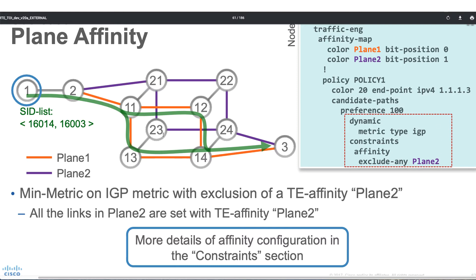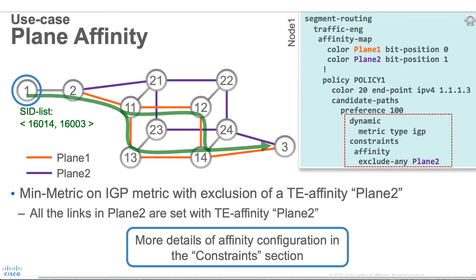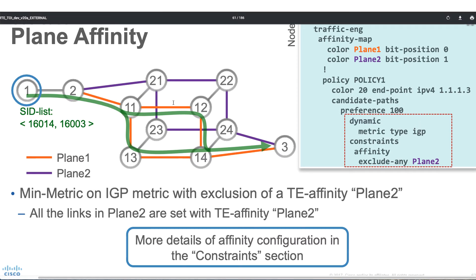That means don't pick the purple path — any node where we see the purple line. That's how we can associate these constraints when bringing up our policy with the optimization objectives. That's what affinity is. We are configuring a link affinity. The link between 2 and 21 is colored with purple, which is simply called plane two. We do this with the help of an affinity map: first configure an affinity map, then pick this color value and start coloring or assigning that color to the links.